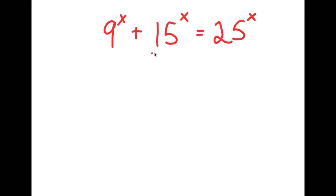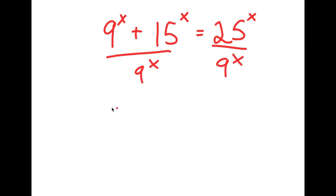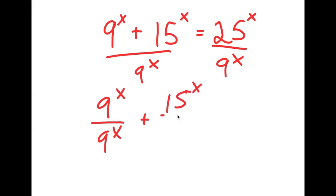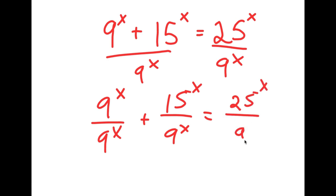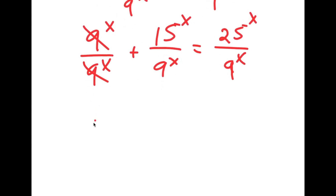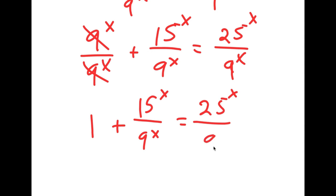In this problem, I have 9 to the power of x plus 15 to the power of x is equal to 25 to the power of x. I'm going to first start by dividing both sides by 9 to the power of x. So this results in 9^x over 9^x plus 15^x over 9^x equals 25^x over 9^x. Since 9^x over 9^x cancels, I get 1 plus 15^x over 9^x is equal to 25^x over 9^x.